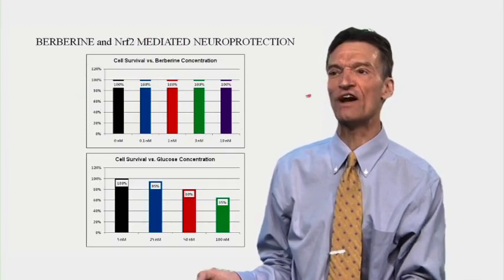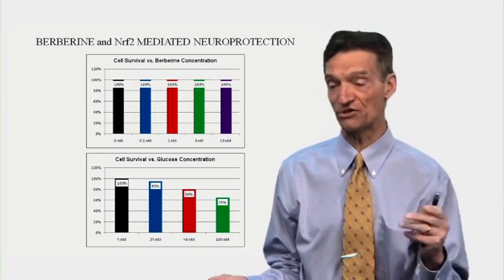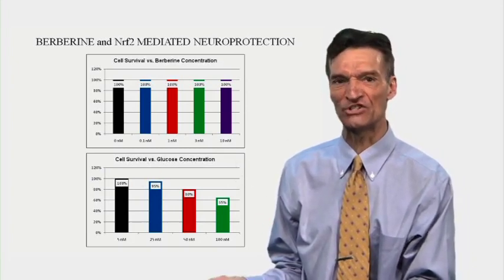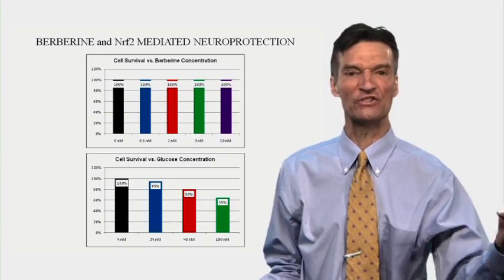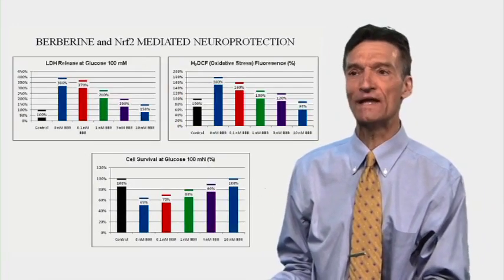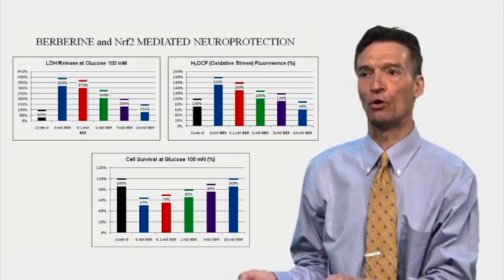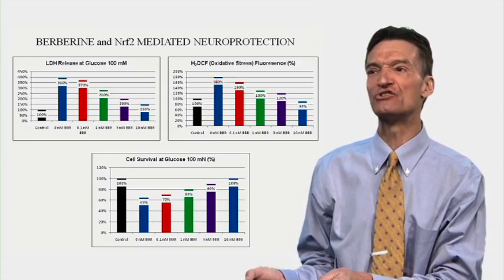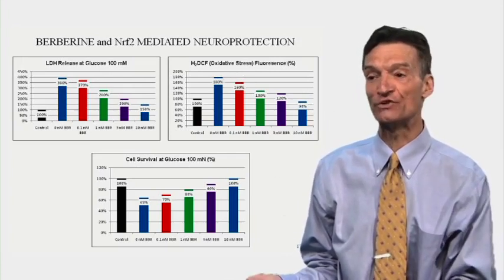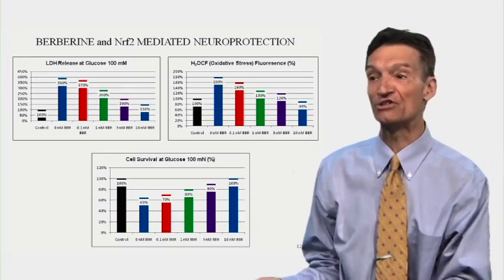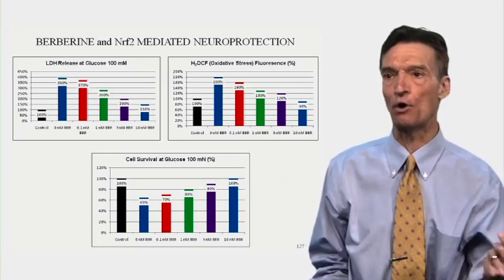Berberine had no adverse effect on cell survival. Berberine is not toxic to our cells unless we go to ridiculously high doses not achievable in clinical medicine. However, as we raise the blood sugar level within the cells above normal, we see a reduction in cell survival — the cells are dying, committing apoptosis in response to the hyperglycemic situation. LDH release from the cells — indicating cell membrane rupture — is brought on by high sugar and there's dose-related protection with berberine. Cell survival is only 65% with high sugar without berberine and it's 100% with high sugar plus berberine.